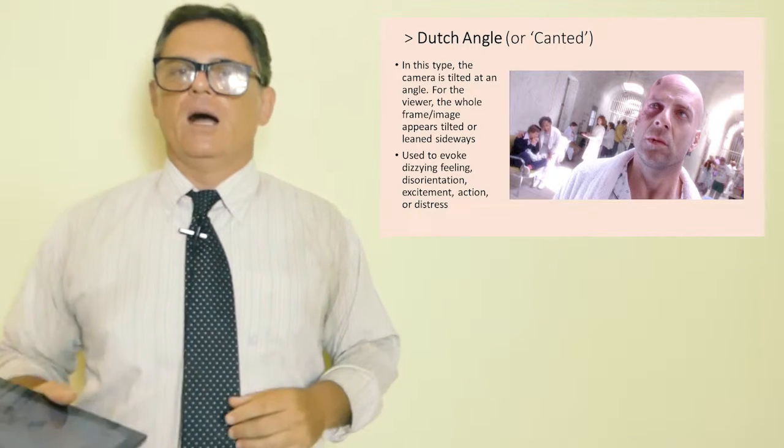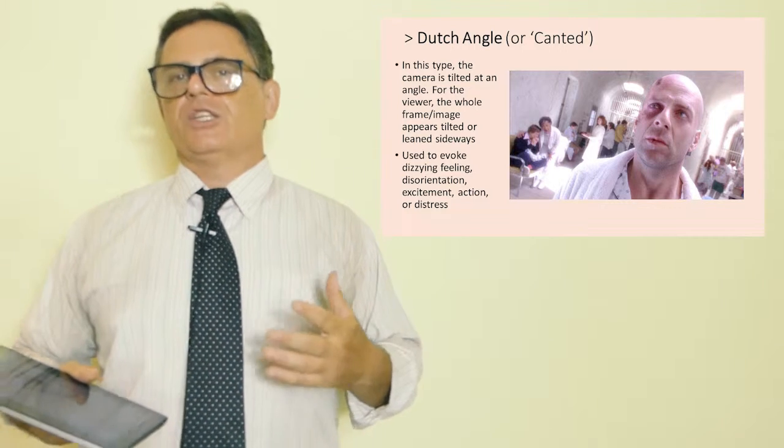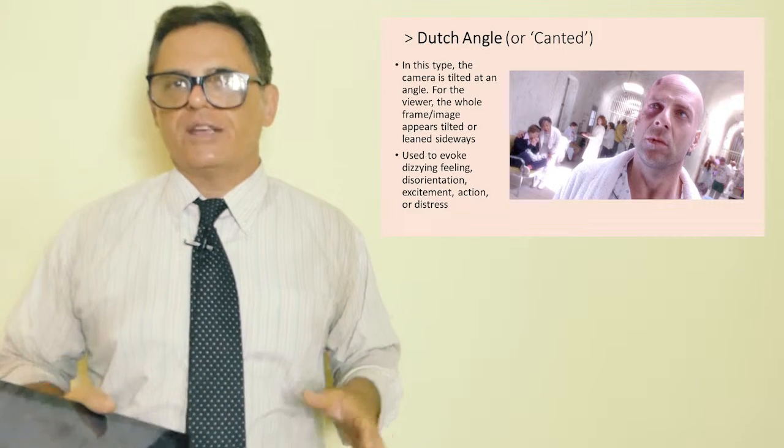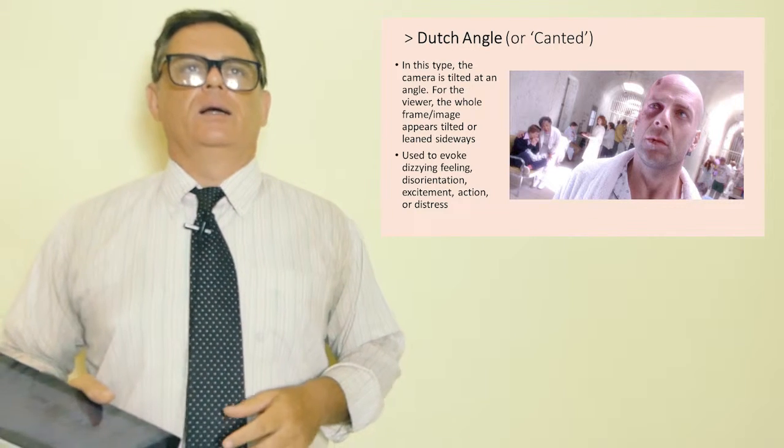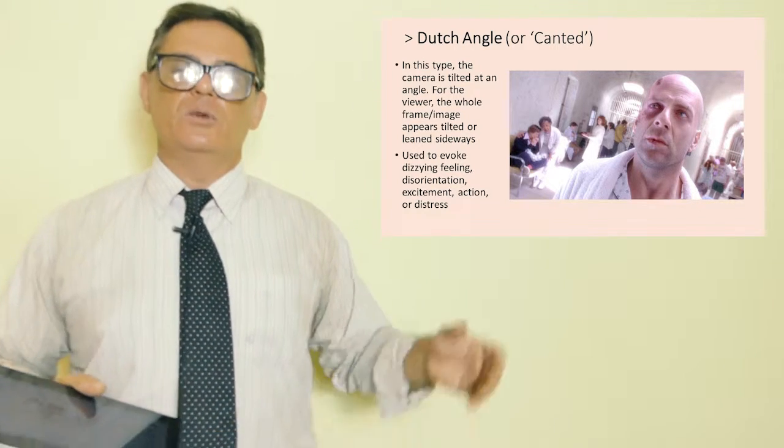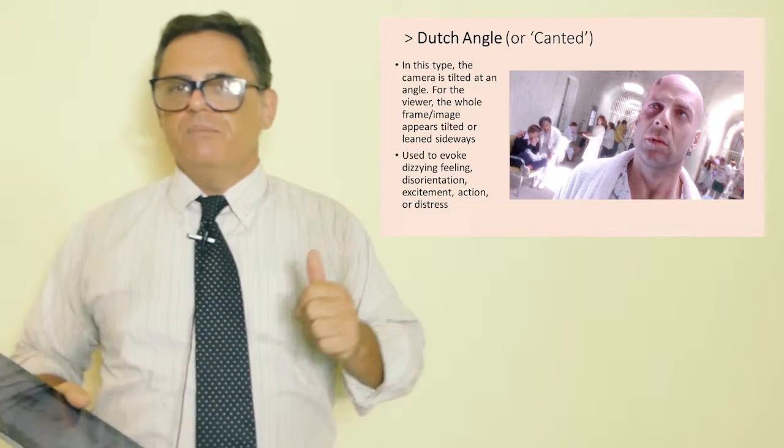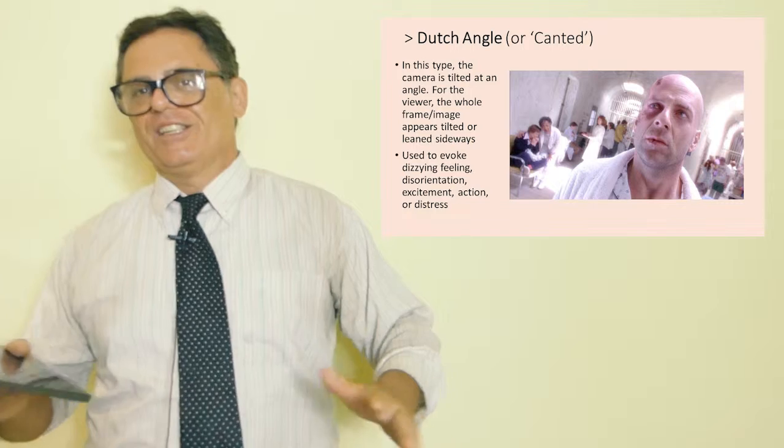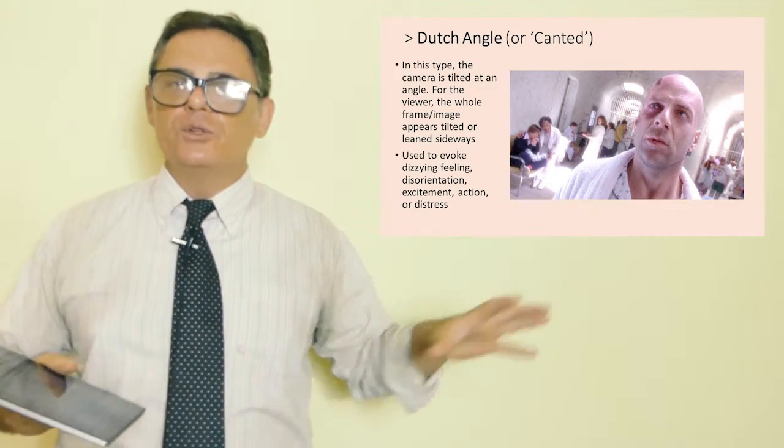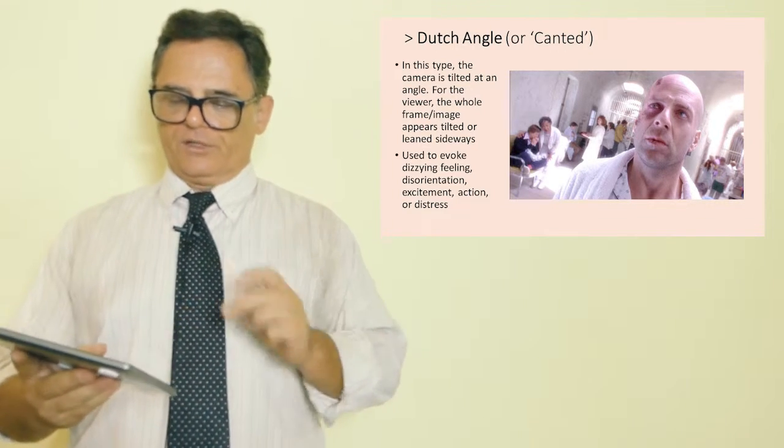It is used to evoke uncomfortable or disoriented feelings in the character and therefore the viewer. So we identify with the character as a viewer following the story. If the character is presented in this Dutch angle, we perceive it to be a disorientation, or maybe it's a extreme peak action moment or extreme peak distress or doubt. Movies like Thor, recent movies like Thor or Doctor Strange, they use the Dutch angle a lot during their action scenes and chase scenes because it shows this peak activity, intense activity in an unusual environment. That's, and it's intended to sort of disorient the viewer slightly.